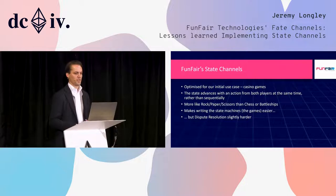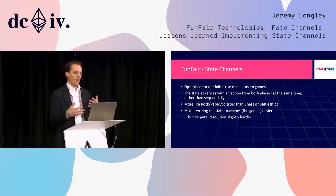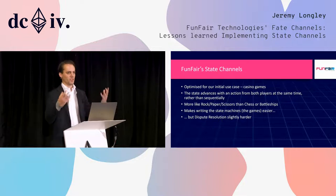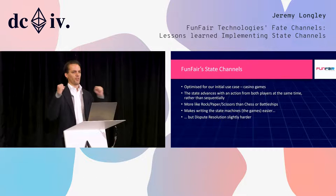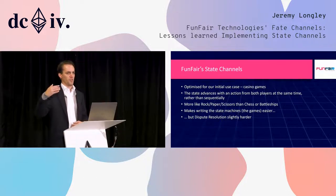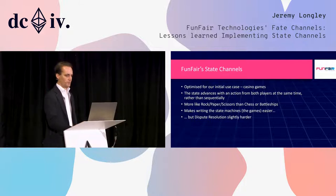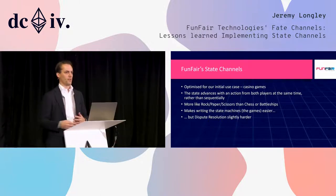It's optimised for casino games, unlike examples like chess where people take one move at a time. We advance the state with an action from both players simultaneously — more like rock, paper, scissors — and we combine that together with the random number to produce the next state in the sequence. This makes writing the state machines themselves a lot simpler, as there's only really one function to advance the state, but it does make dispute resolution quite a bit harder.